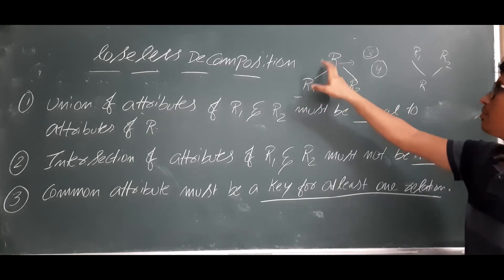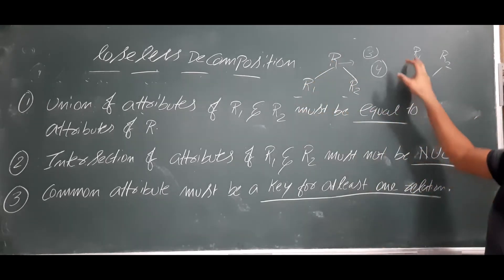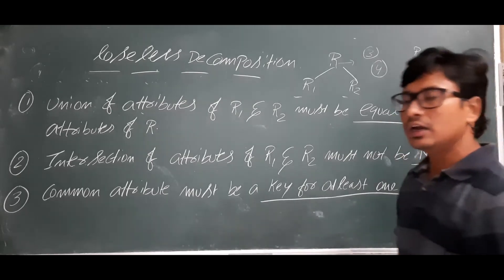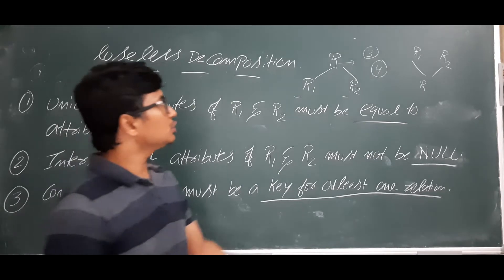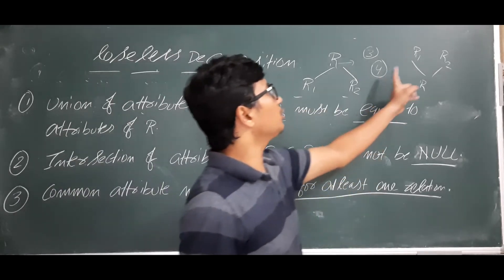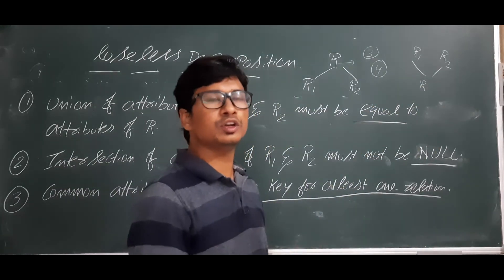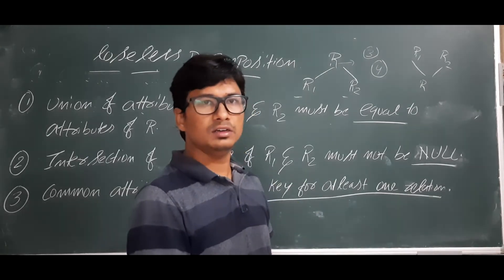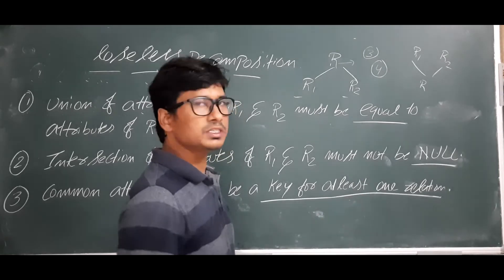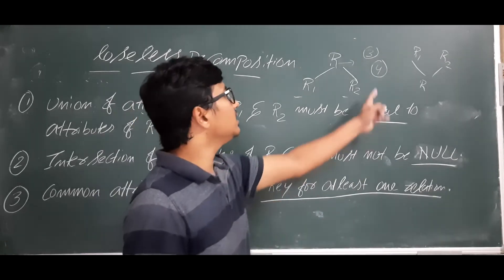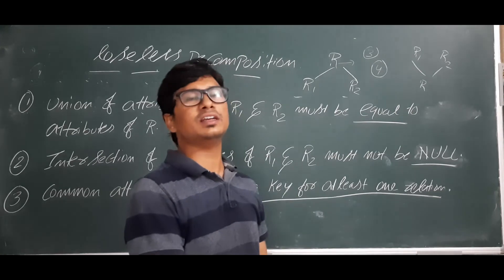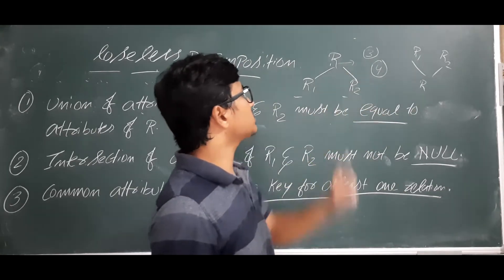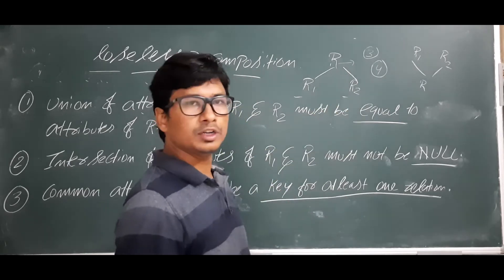If you decompose R into R1 and R2, and then apply the join operation on R1 and R2, you should get back the original relation R.